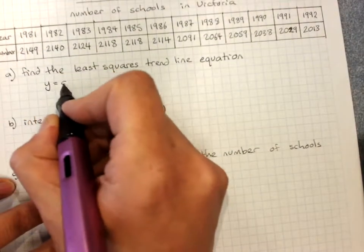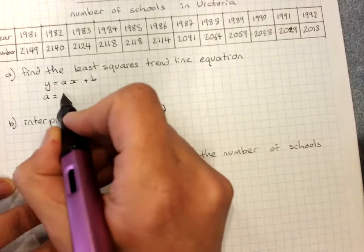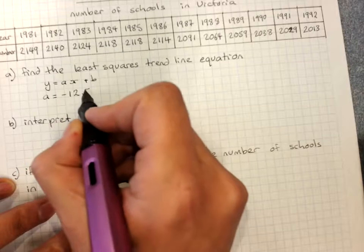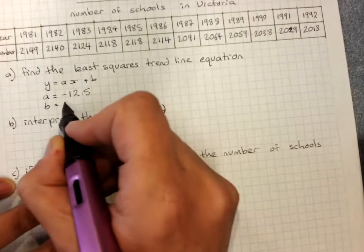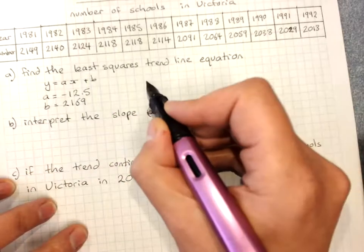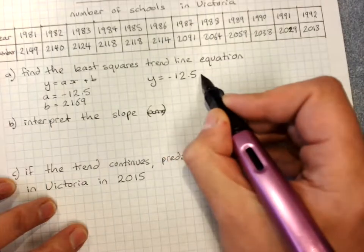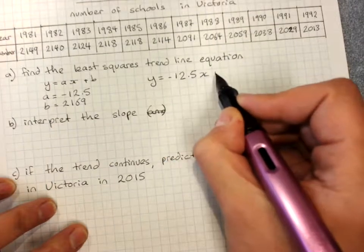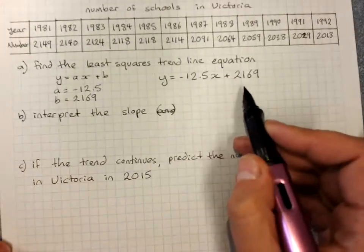So y equals ax plus b. If we've used the graphics calculator, remember it's a good idea to write down the display. And then that would be y equals negative 12.5x plus 2169. So that's the equation of my line of best fit.